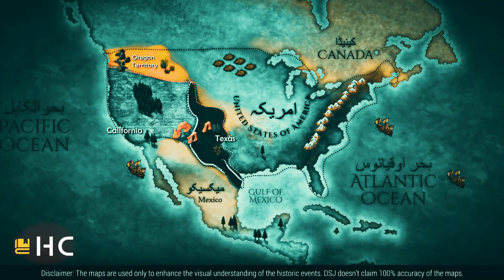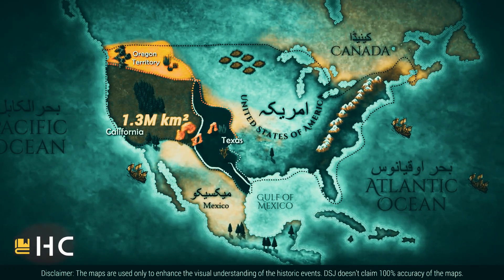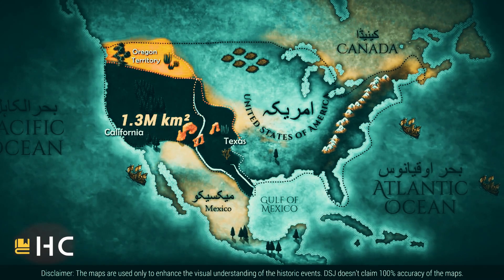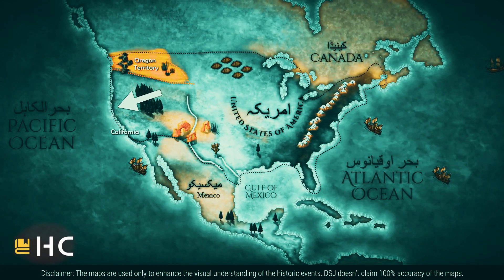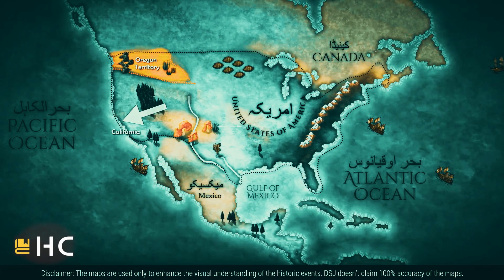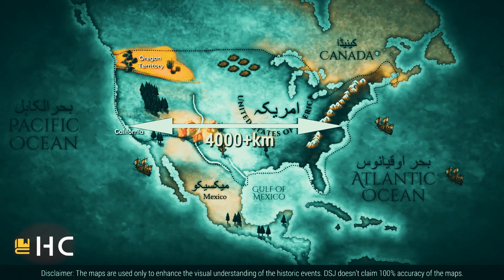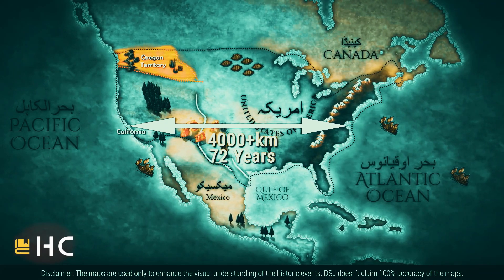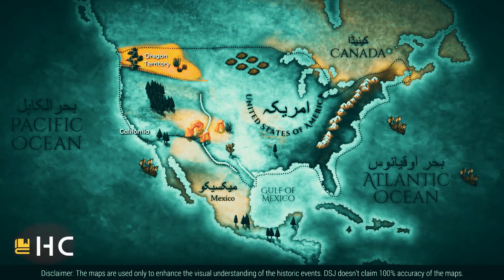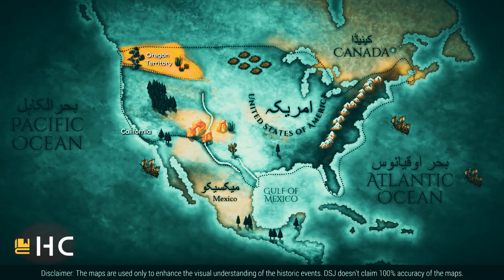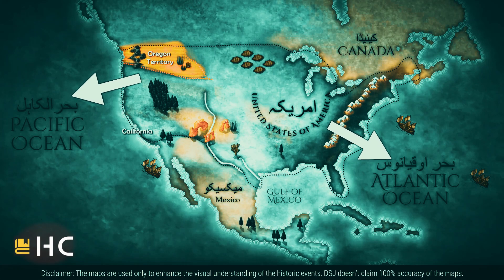When US troops occupied Mexico City, the Mexicans decided to end the war and began ceasefire talks. On February 2, 1848, both countries signed a ceasefire deal. Mexico recognized Texas as part of the United States and gave more land to the US — surrendering 1.3 million square kilometers. Crucially, the United States took control of California, meaning they had now reached the shores of the Pacific Ocean. This was a journey of more than 4,000 kilometers from the East Coast to the West Coast, covered within 72 years of independence. The dream of making America a great power had finally come true.